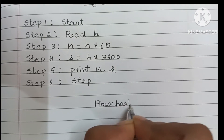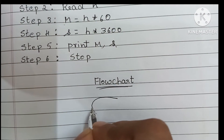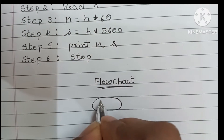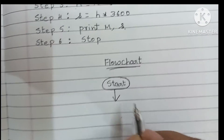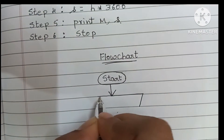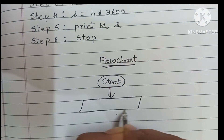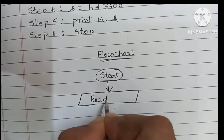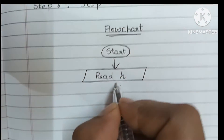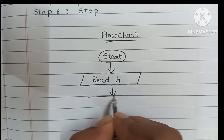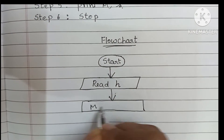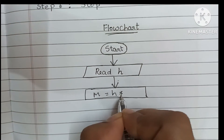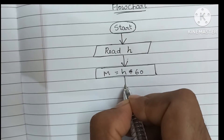Next we have to draw the flowchart. A flowchart is a graphical representation of an algorithm. A flowchart always starts with the start statement, written within an oval shape. Next we draw a parallelogram shape to read the input value: read h. Next we draw a rectangle to calculate minutes, that is m is equal to h into 60.